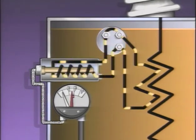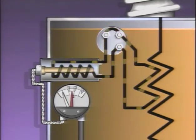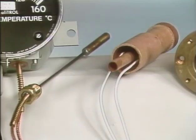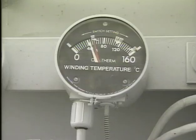The function of the current transformer and the heating element is to simulate the temperature rise created by the power transformer winding. The winding temperature is determined by the load on the winding, the thermal characteristics of the winding, and the temperature of the transformer oil. The heat created by the heating element and the heat of the transformer oil both act on the temperature-sensitive bulb, and the temperature measured represents the simulated winding temperature.